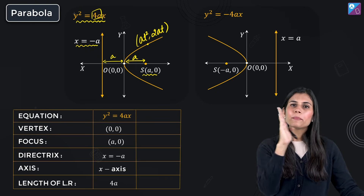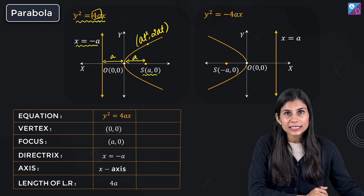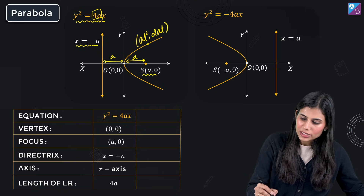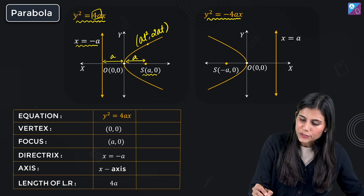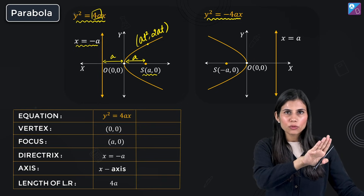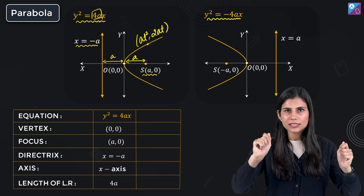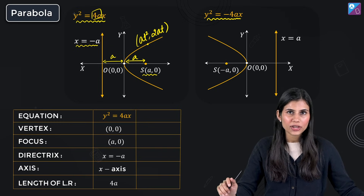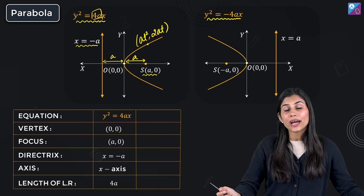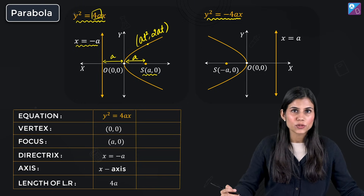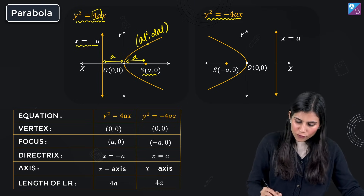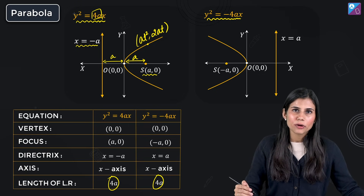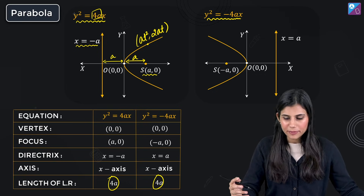When you flip the parabola about the y-axis, you get the leftward opening parabola with its vertex at origin, given by y² = -4ax. Flipping does not disturb the size or shape, so the length of latus rectum for the leftward opening parabola — and for that matter the upward or downward opening as well — remains the same, 4a. This parabola is also symmetric about the x-axis.